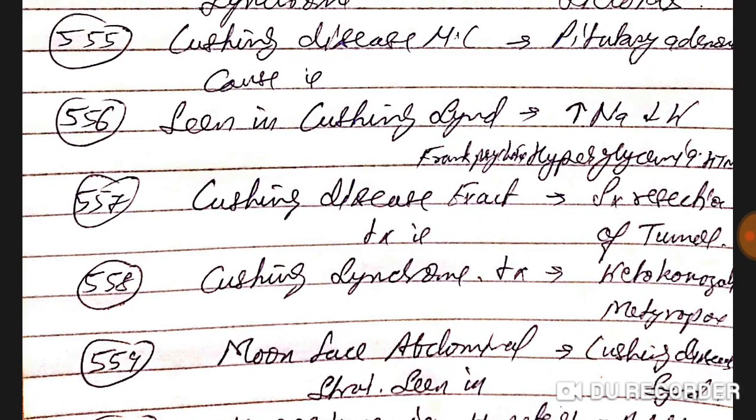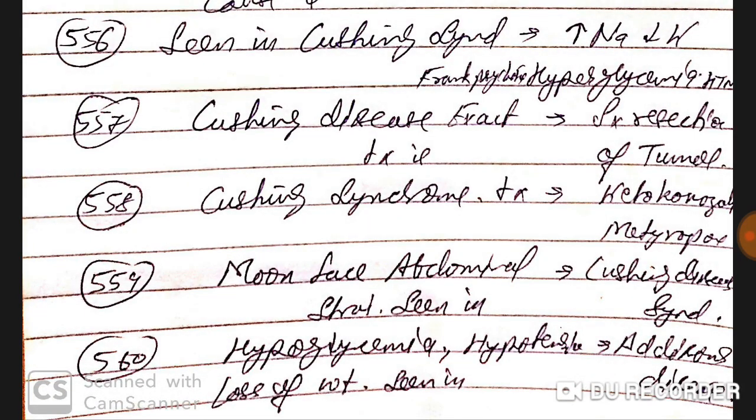In Cushing syndrome, we see increased sodium, decreased potassium (hypokalemia), hypernatremia, frank psychosis, hyperglycemia, and hypertension.